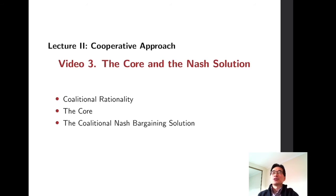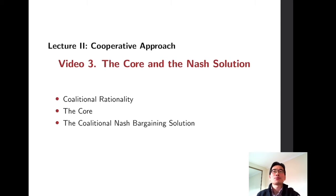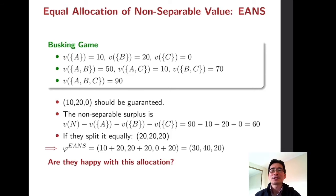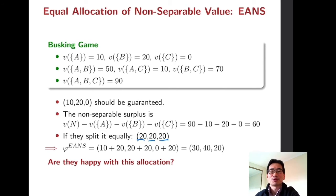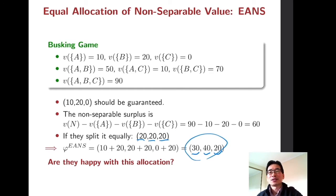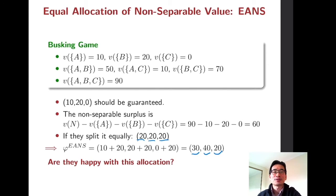One remark: you should not be confused this Nash solution in cooperative games with the Nash equilibrium in non-cooperative games. Let's recall the equal allocation of non-separable value. This allocation splits the non-separable part equally, so in this particular busking game example they split the non-separable part equally: 20, 20, 20, so their final payoff is 30, 40, and 20. Of course this allocation is efficient and individual rational, but the question is: is everyone happy with this allocation?